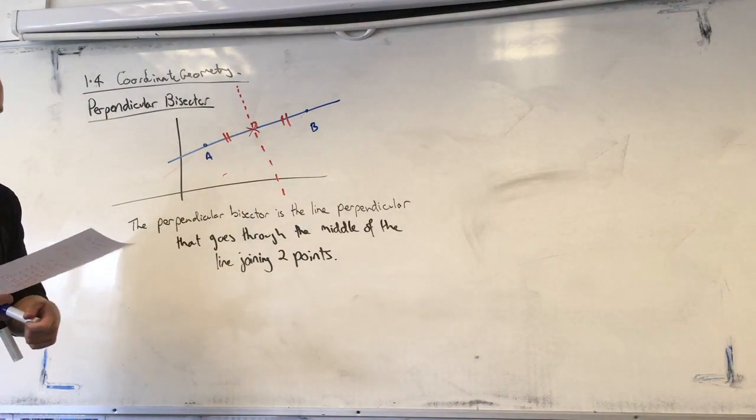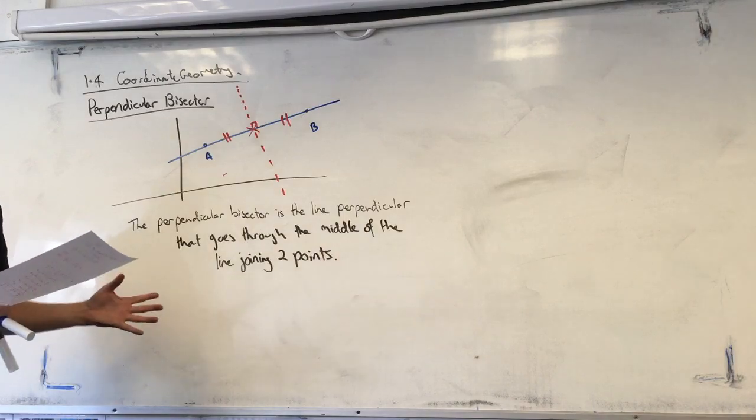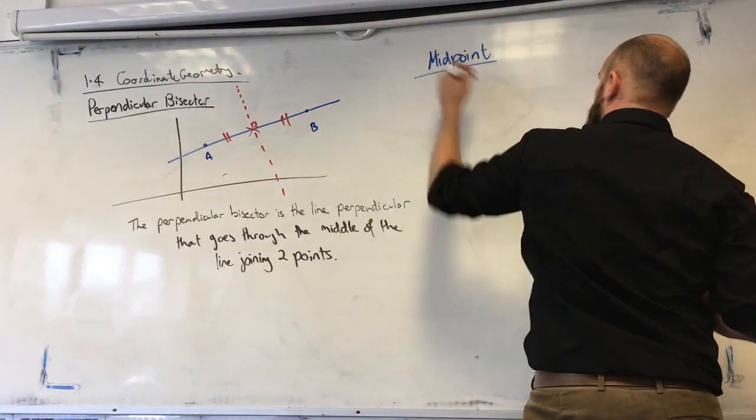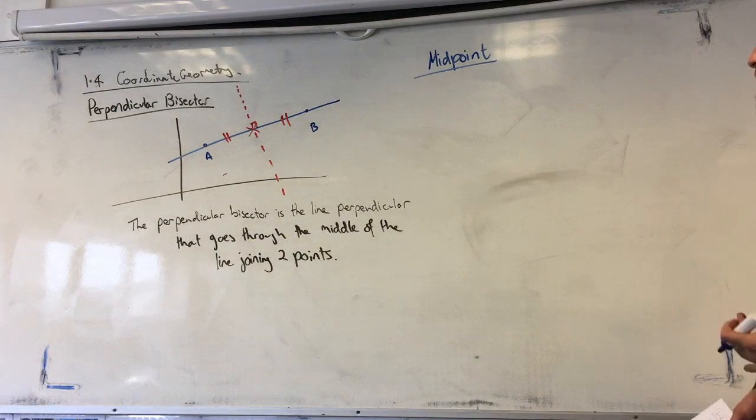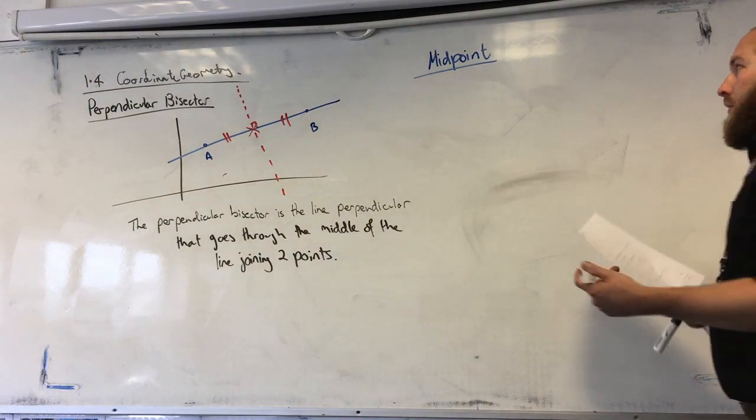So first things first, we're going to start with finding out the midpoint of two points. And the midpoint of two points is actually the average of the x-coordinates and the average of the y-coordinates.